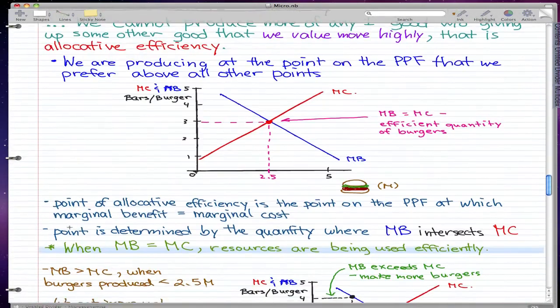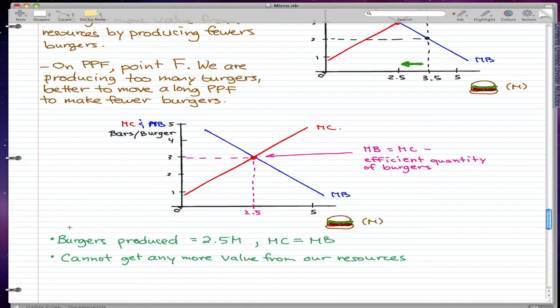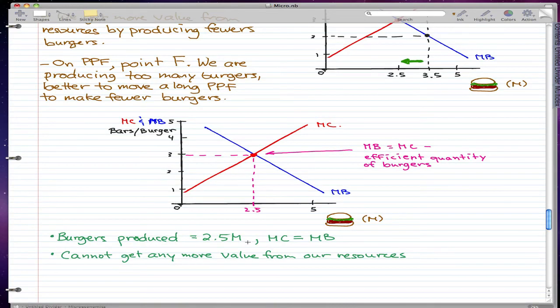Then we can get more value from our resources by producing fewer burgers. And I guess we're going to look at the last graph. We're going to go back to our graph that we presented in the beginning. When we produce the quantity of burgers equal to 2.5 million, or when we're producing 2.5 million burgers exactly, the marginal benefit equals the marginal cost. And in this situation, we cannot get any more value from our resources. So on the PPF, we are producing the efficient quantities of burgers and bars when we are producing a quantity of 2.5 million burgers.